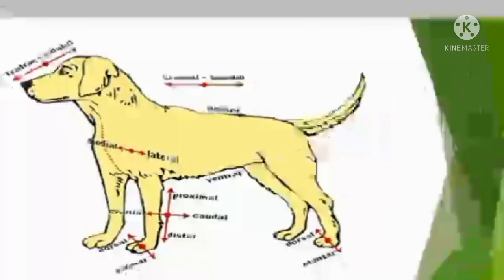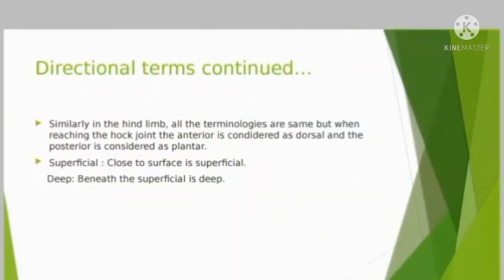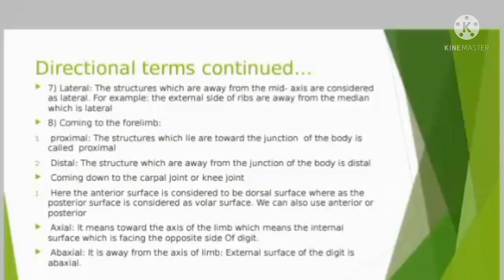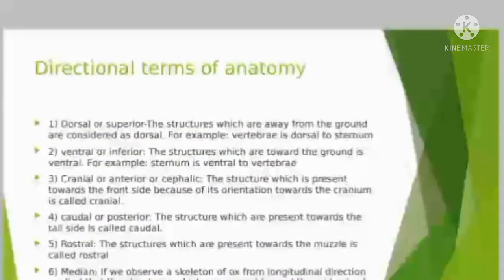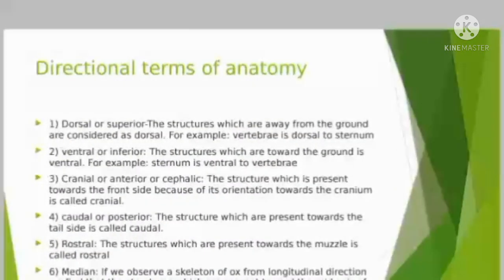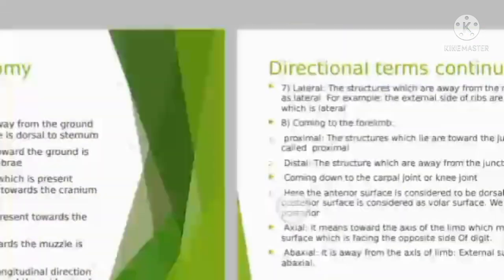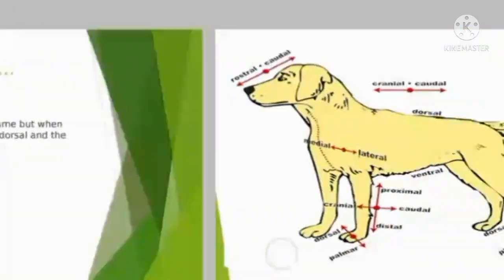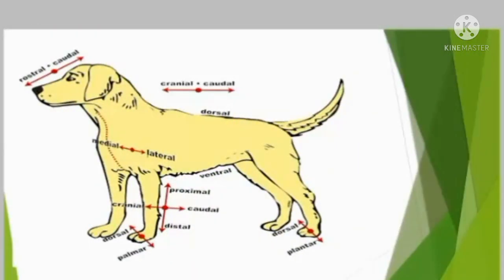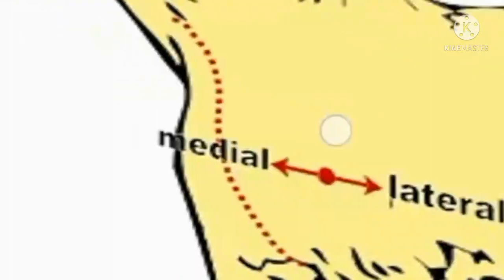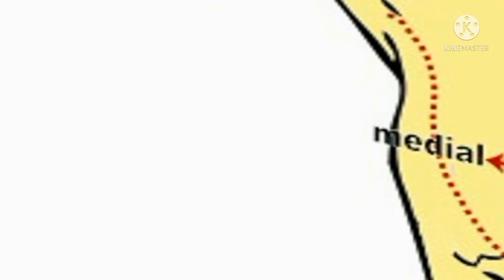Moving forward, we will now look at rostral. The structures which are present towards the muzzle are called rostral.